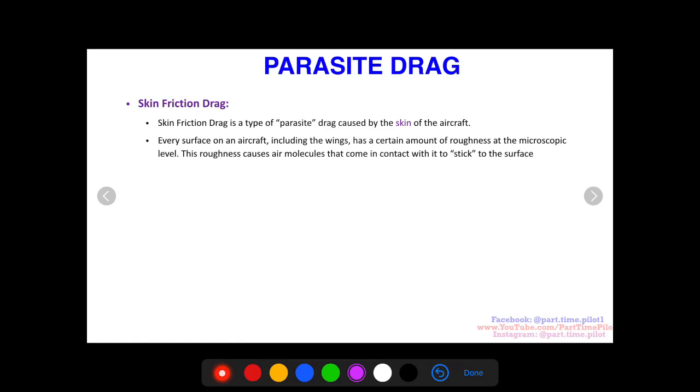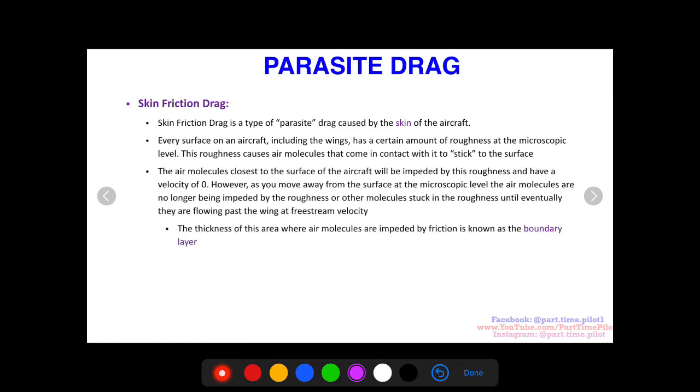The molecules are sticky and the surface is imperfect. The air molecules closest to the surface of the aircraft will be impeded by this roughness. You have a stream of air, and at the top of the stream, furthest away from the skin of the aircraft, they're not affected. But really close to the skin of the aircraft, those air molecules are going to stick to the skin and get impeded by the roughness of the skin and have a velocity of zero.